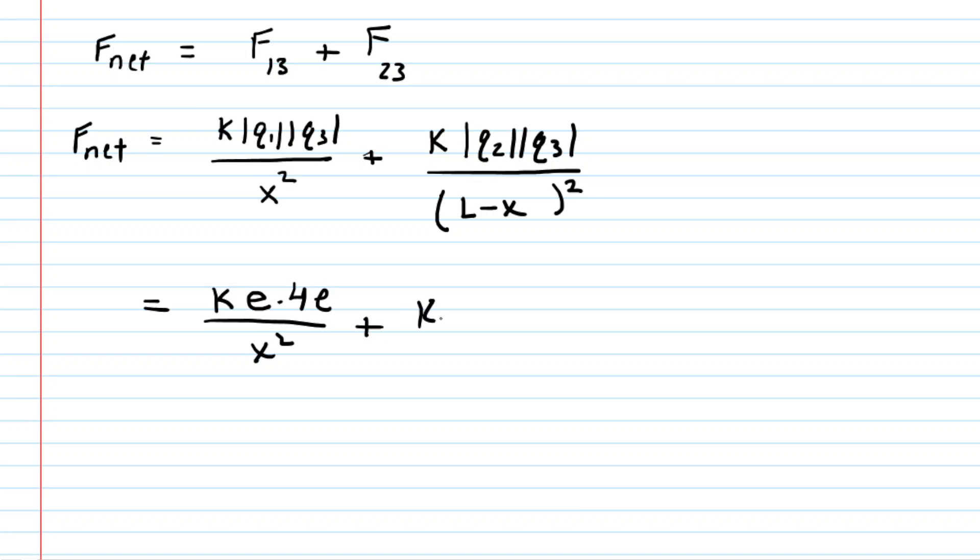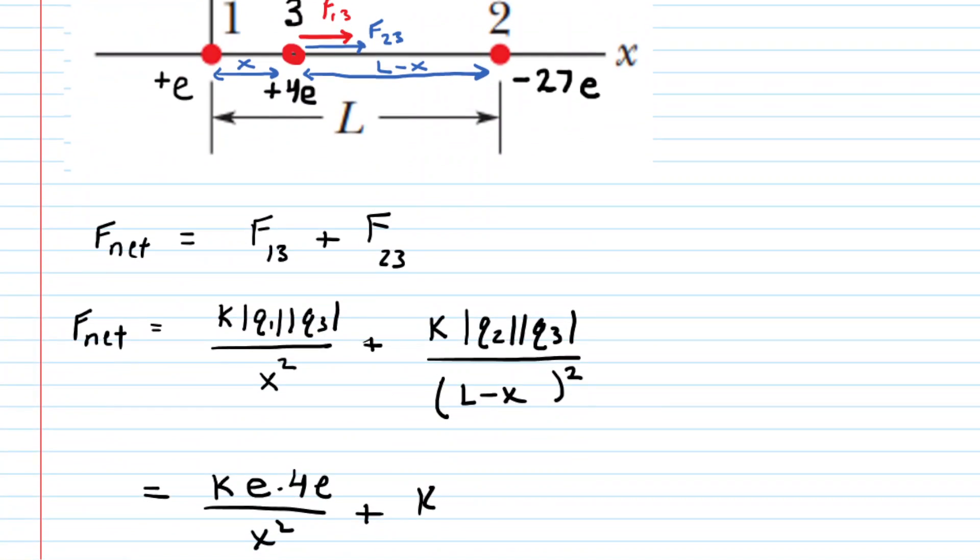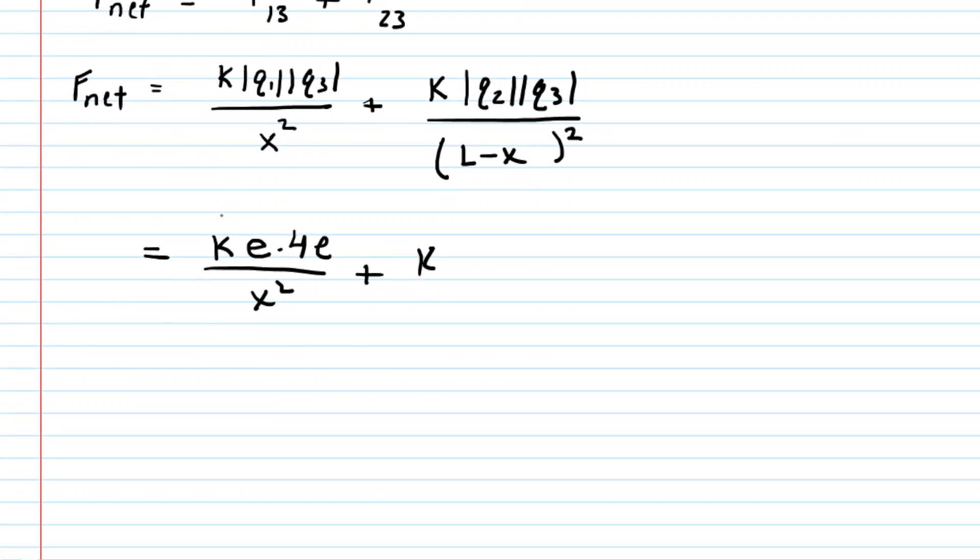Coming over to the other force expression, we look up the charge of Q2, and that one was negative 27e. But remember, you're taking the absolute value of it. So the negative 27e would actually become a positive 27e. And then again, charge 3 had a value of positive 4e. This will all be divided by L minus x squared. So there it is, the net force acting on charge 3 with some values plugged in.